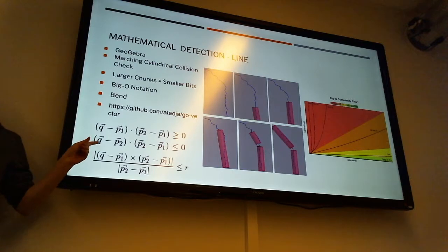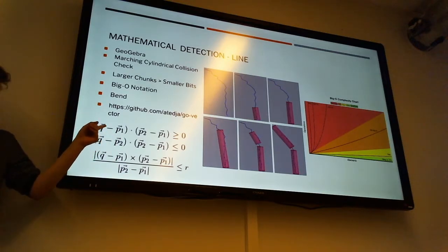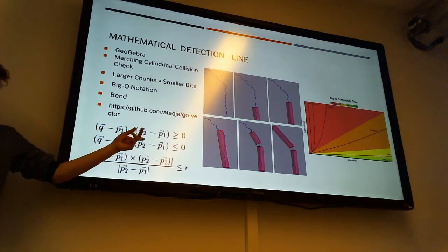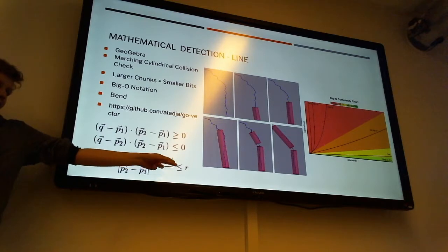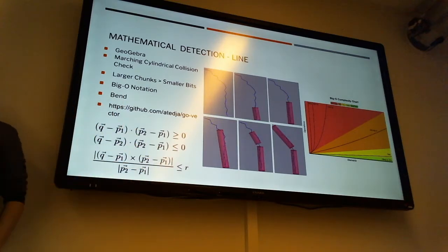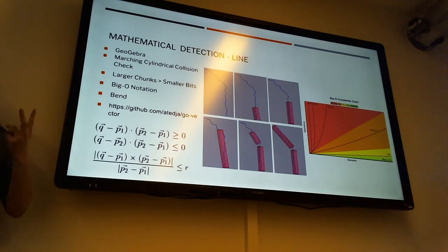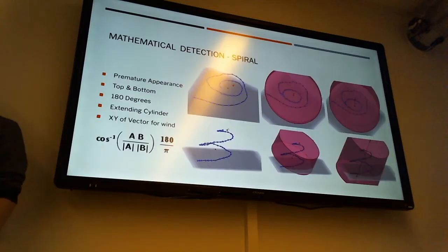This here is the formula for how you detect the collision of any given point inside the cylinder. So Q is the point, it's a 3D vector, P1 is the starting point of the cylinder, P2 is the end point, and then R is the radius. All of these three different conditions have to be true, otherwise the point is not in the cylinder.